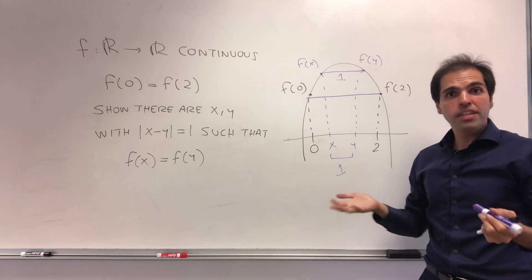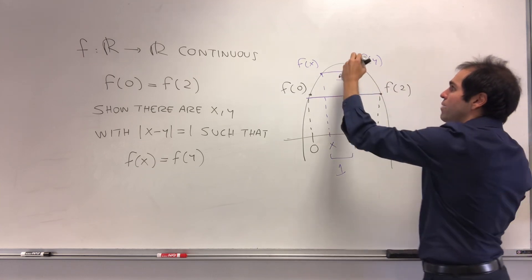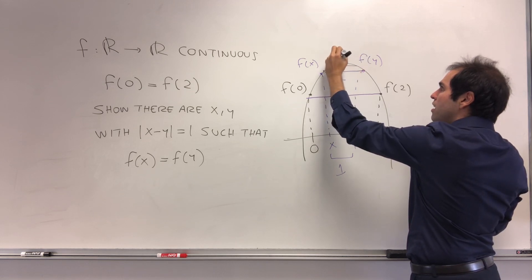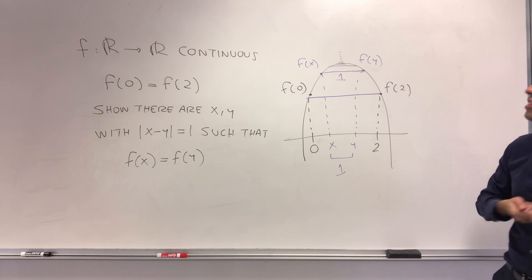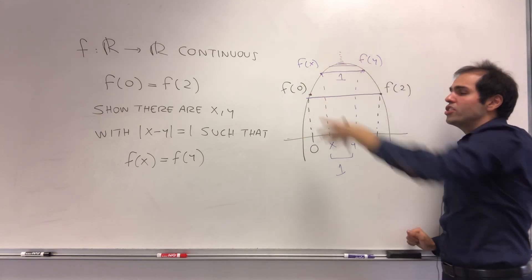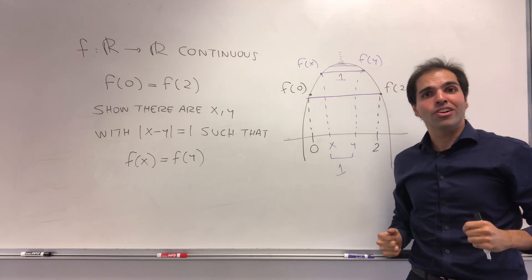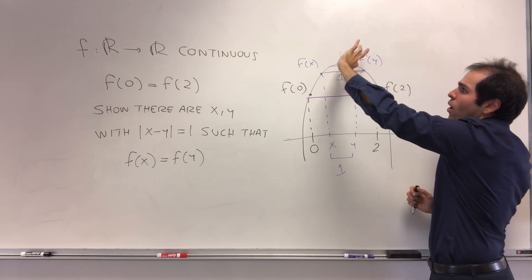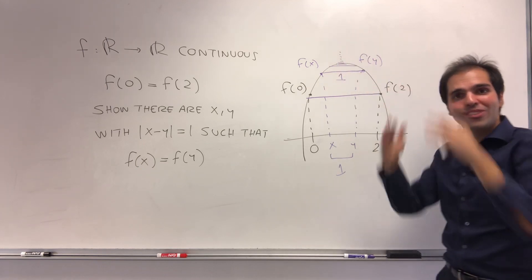Repeating this argument, we'll be able to cut out segments of length 1/2, 1/4, 1/8, and so on, until we reach maybe a single point. In other words, such functions have this triangular structure in some sense. You have segments of length 2, 1, 1/2, 1/4, and so on.